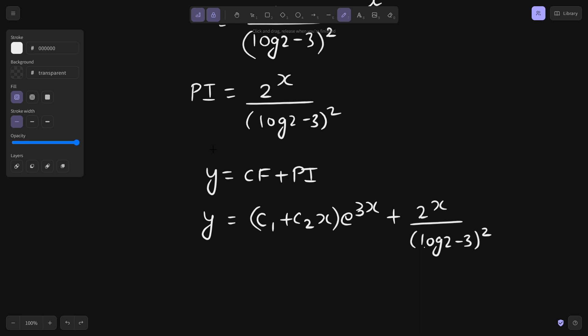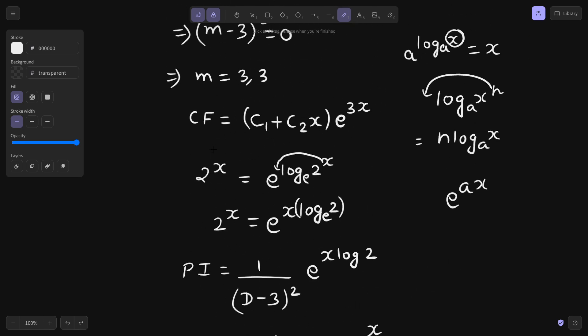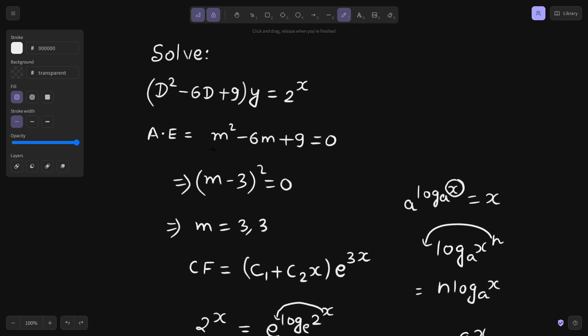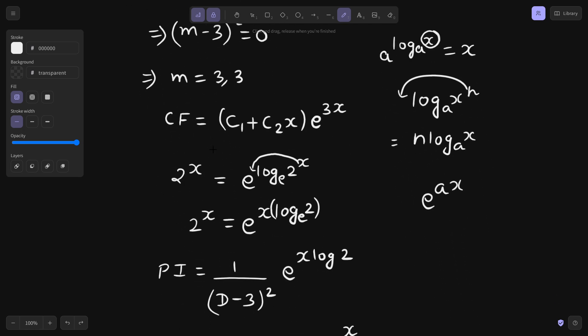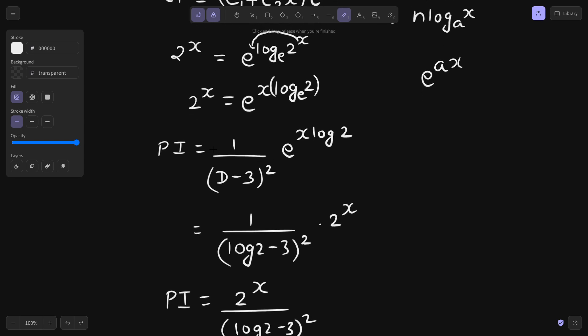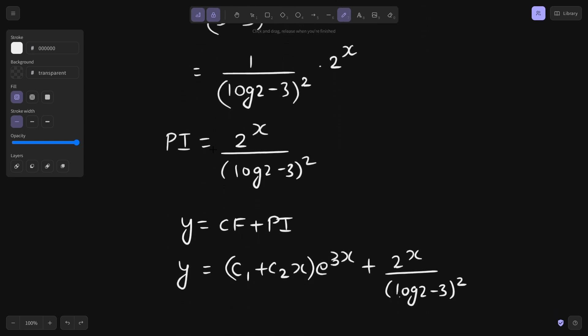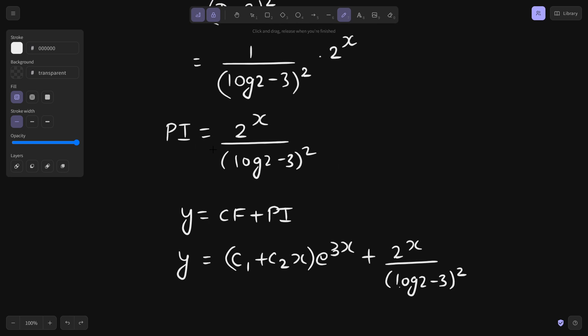This is the final solution. I hope you learned something, that if in case you get 2 power x which is also exponential function instead of e power x, how to approach for that. The approach for CF is all the same, but the approach for particular integral changes. You just need to apply some properties of logarithm and move forward. That's it for today. You can watch out the playlist on ordinary differential equation for more such problems. Thanks again.